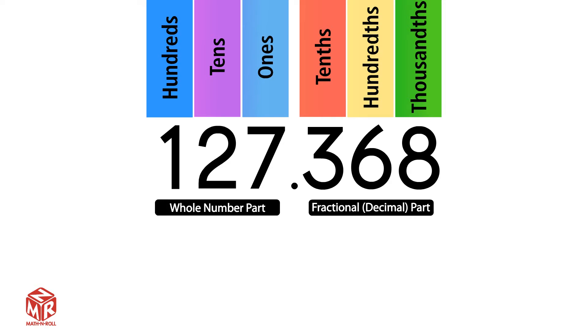The whole number can have ones, tens, hundreds, thousands, and so on. The fractional part is to the right of the decimal. It can have tenths, hundredths, thousandths, and so on.